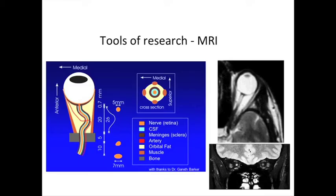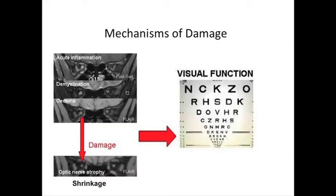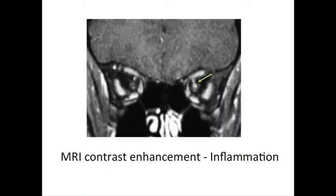One of the tools we use is MRI, which provides detailed pictures of the optic nerve itself. Different types of MRI scans allow us to investigate different aspects of the processes in optic neuritis. In the early phase we tend to see inflammation, demyelination, and swelling, all captured with different MRI types. In the long term there may be persistent damage causing shrinkage of the optic nerve. On the right-hand side, the inflamed optic nerve appears brighter when contrast is injected into the arm.